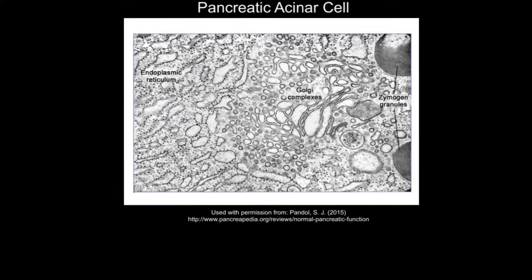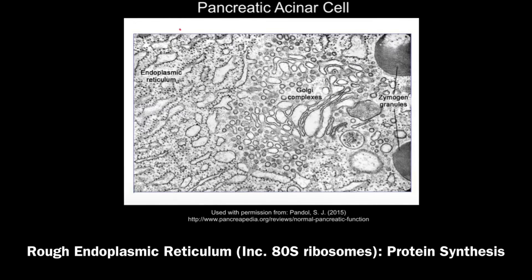Given that we know enzymes are proteins, it should not surprise us that when we look at an acinar cell under an electron microscope we see many organelles associated with protein synthesis. Here we can see rough endoplasmic reticulum — it's rough because it is associated with 80S ribosomes, as this is a eukaryotic cell.